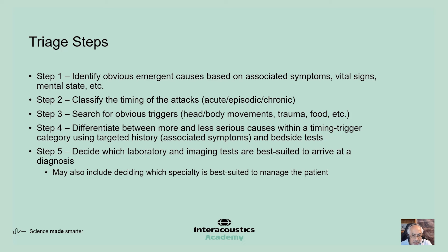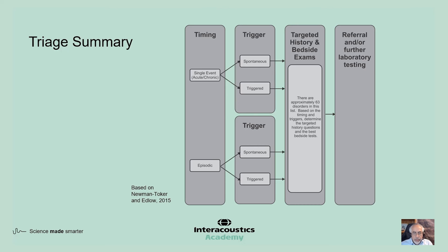Some of you may also need to decide which specialty to refer this patient to. This diagram summarizes the triage steps. There are approximately 63 disorders that have dizziness as their primary symptom. Once you go through the timing and triggers, you narrow that list down, then decide on the best targeted history questions and bedside exams to reduce it to a manageable level. From there, you decide on the best referral source and, most importantly, which laboratory tests are most appropriate for this patient.